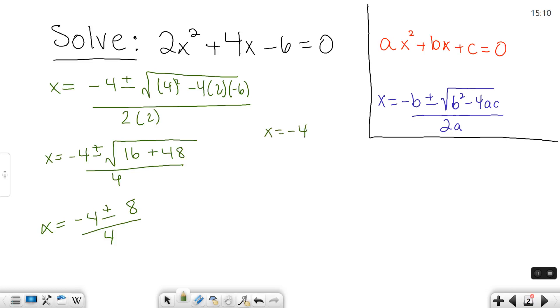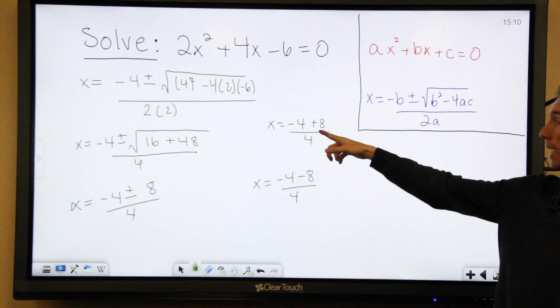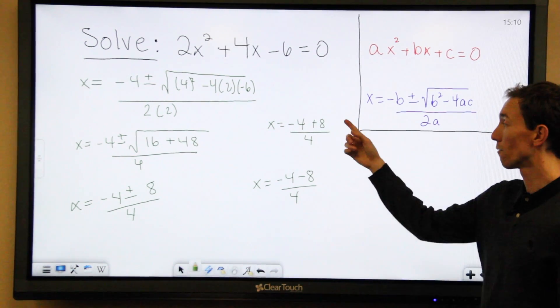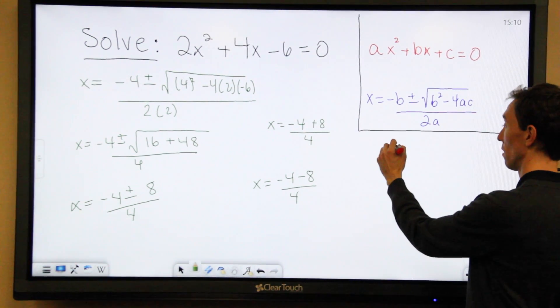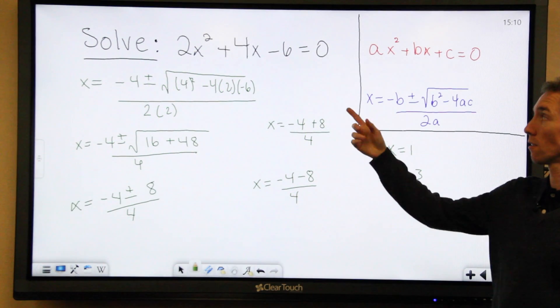Negative 4 plus 8 over 4 and x is negative 4 minus 8 over 4. So simplify each of these and you get your answers. Negative 4 plus 8 is 4 and 4 divided by 4 is 1. So there's one of our solutions. Negative 4 minus 8 is negative 12. Negative 12 divided by 4 is negative 3. So these two numbers are the solutions to this equation.